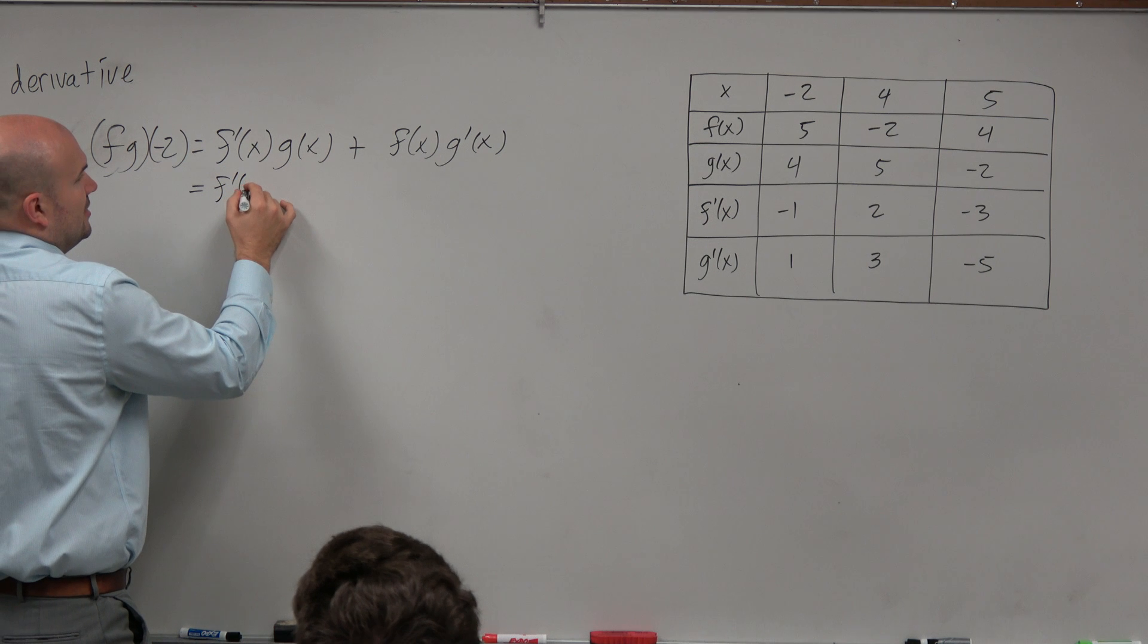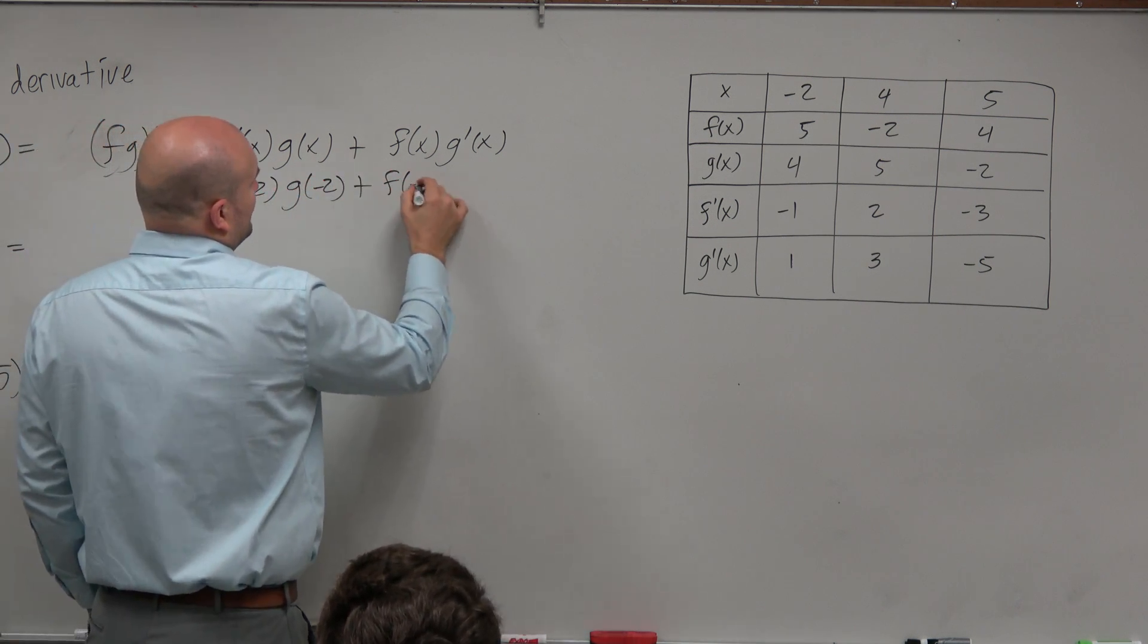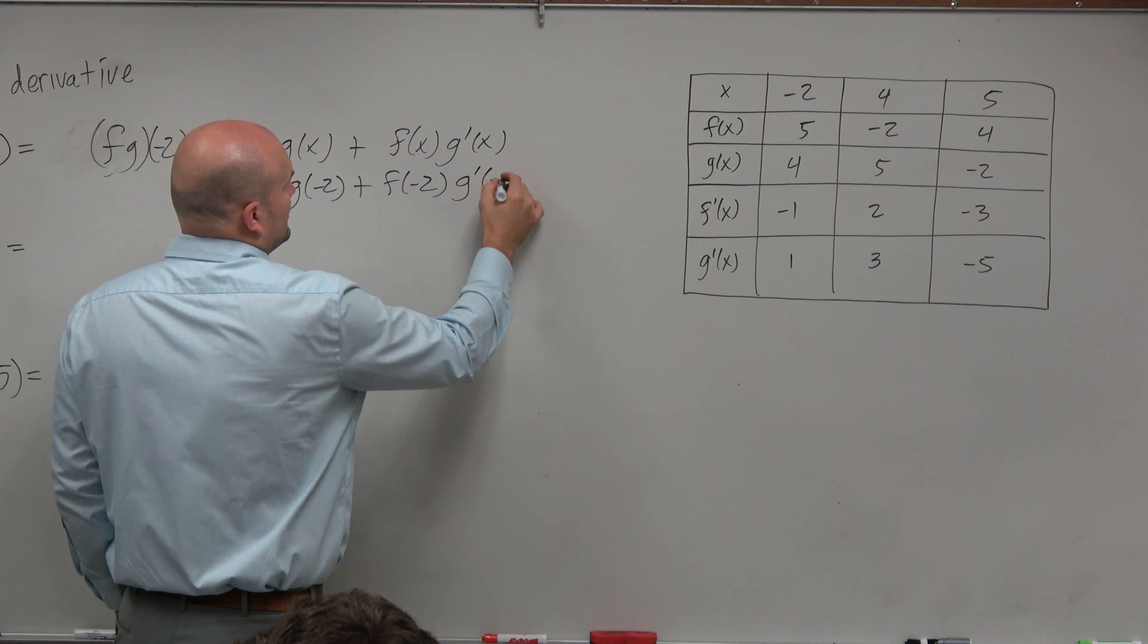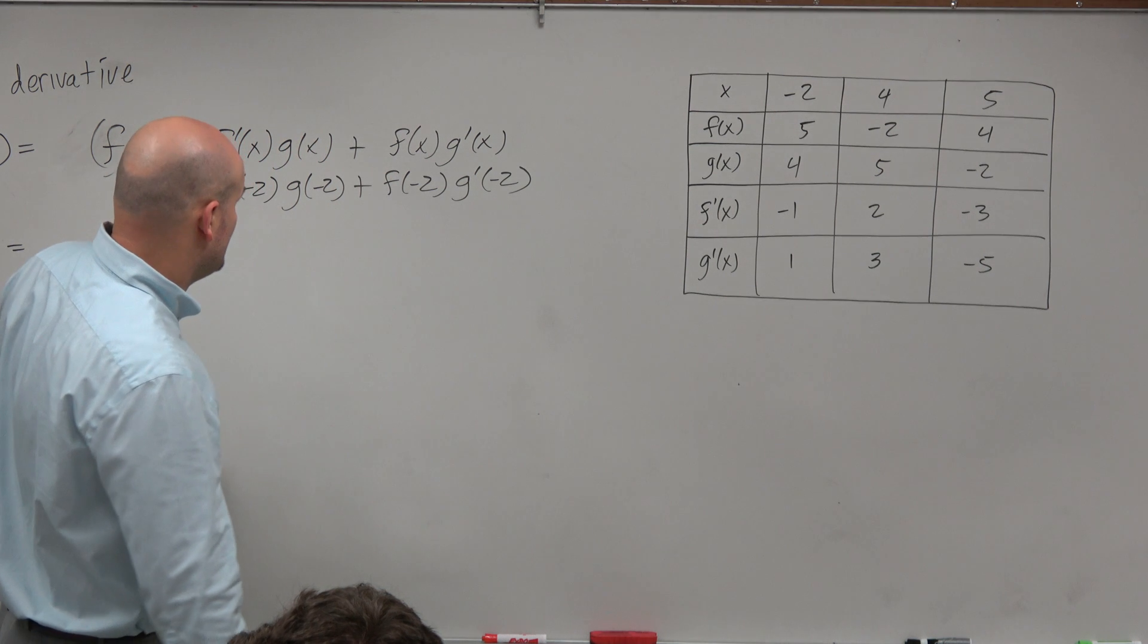we're just trying to evaluate for f prime of negative 2, g of negative 2, plus f of negative 2 times g prime of negative 2. And obviously we can skip around a little bit on a couple of steps on this one.